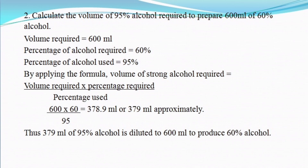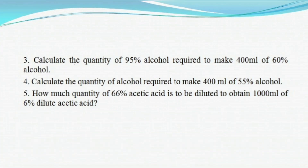Now let's take a practice problem. If a question does not mention the concentration of alcohol, you assume it is 95%. Sometimes in the exam it may be 70%, but mostly it will be 95% alcohol. Practice problem: Calculate the quantity of 95% alcohol required to make 400 ml of 60% alcohol. Put your answer in the comment section.